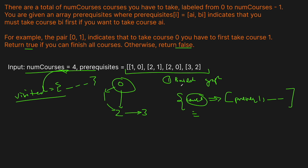We're using topological sort because the same code applies to Course Schedule 2 and also Alien Dictionary — three problems, one algorithm. Now let's go to the code editor and walk through it line by line. Drawing it out is a mess; it'll be much clearer to just watch me code it.